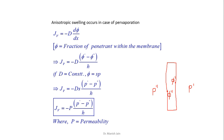The units of J_V are mass per meter squared per second or moles per meter squared per second, depending on the units of phi. If phi is in moles, it will be moles per meter squared per second; if phi is in mass, it will be mass per meter squared per second. D is diffusivity in units of meter squared per second, and x is the distance or thickness of the membrane.